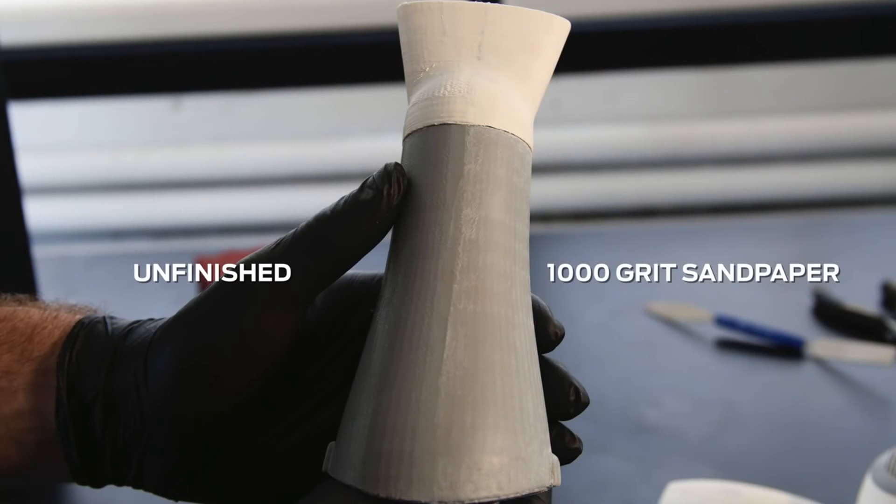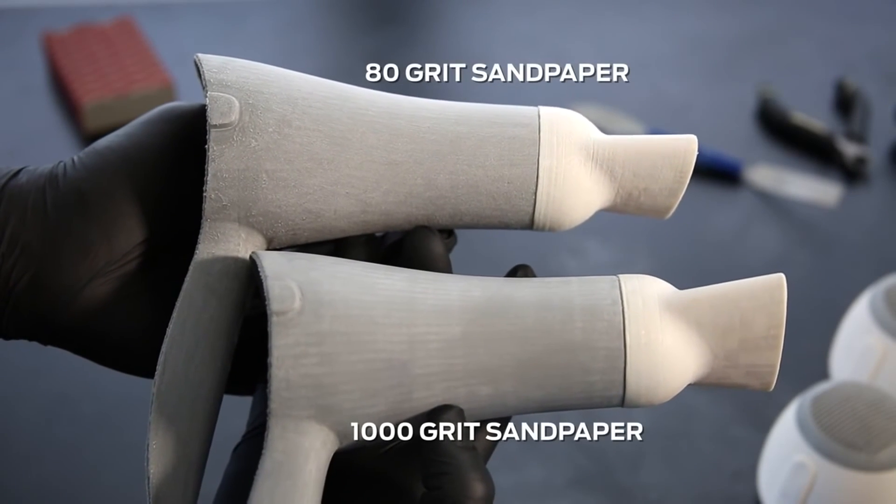Here we have an example of the same model in various stages of sanding. You can see noticeable changes in surface quality at each grit level.